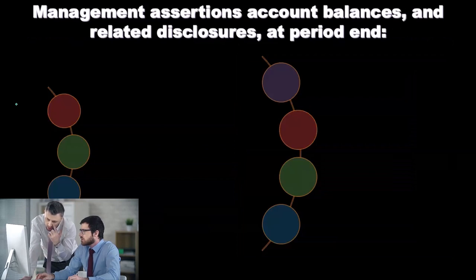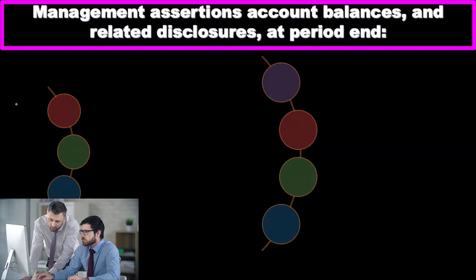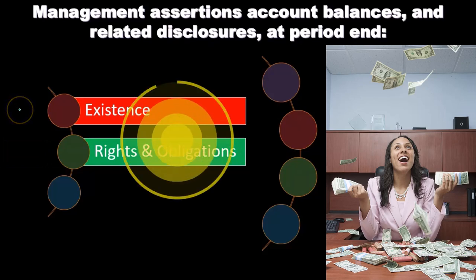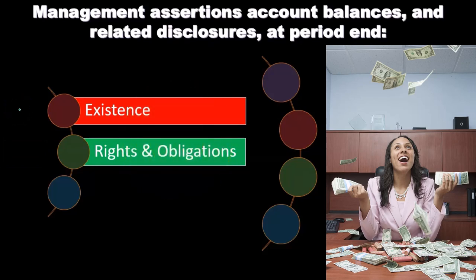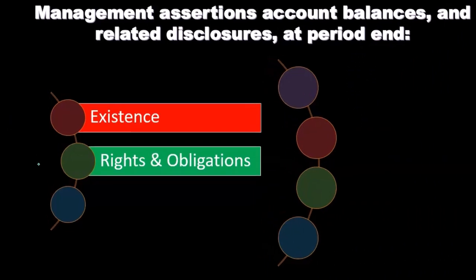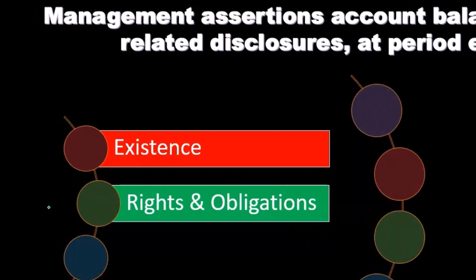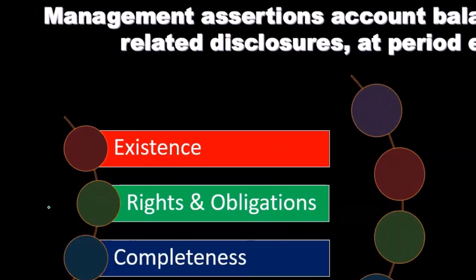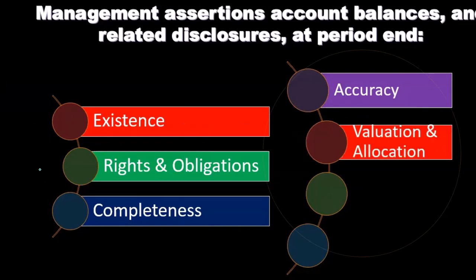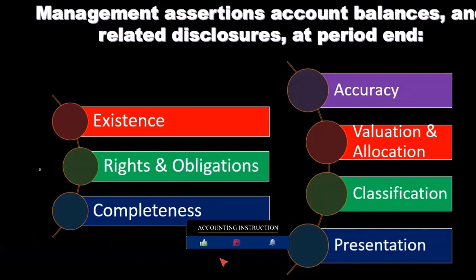The second group is management assertions about account balances and related disclosures at period end. These include existence — for example, with property, plant, and equipment, is what's on the books actually there? Rights and obligations — is the asset actually owned by the company, or is inventory on consignment? Completeness — is everything there? And accuracy, valuation and allocation, and classification and presentation.